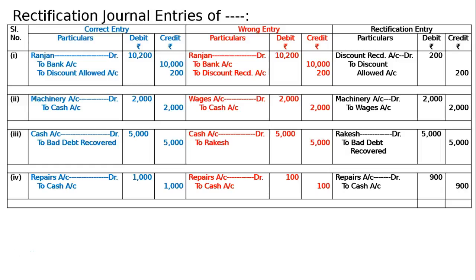The rectifying journal is to be totaled, which is 8,100 in both debit and credit columns. This is the final answer.